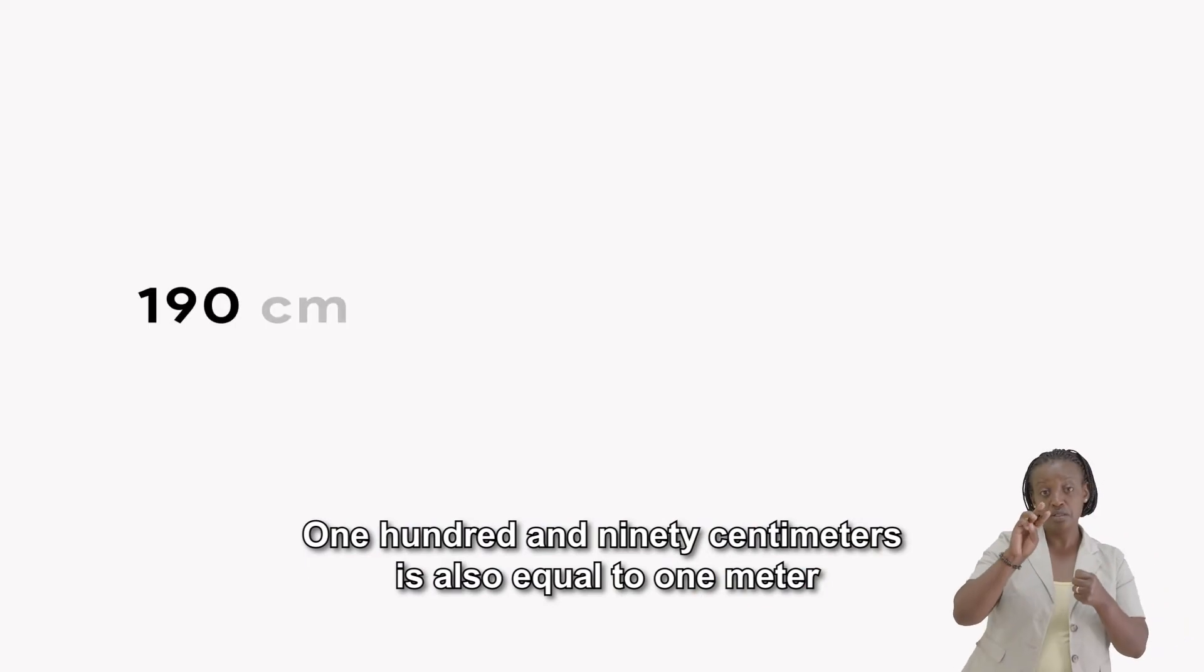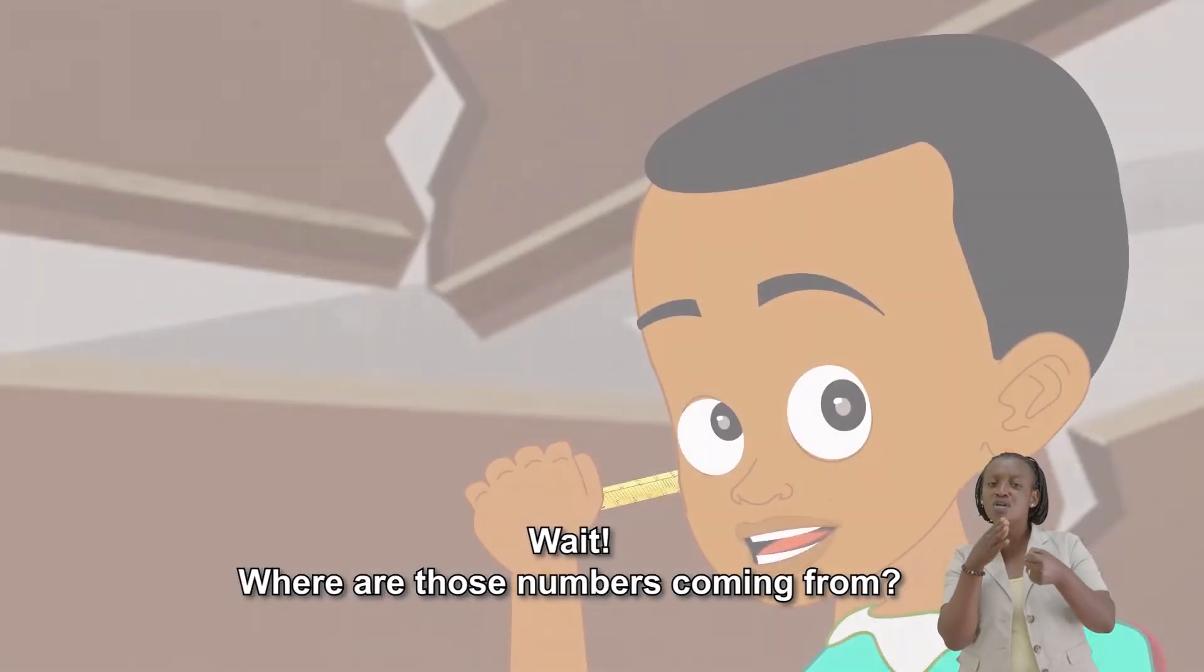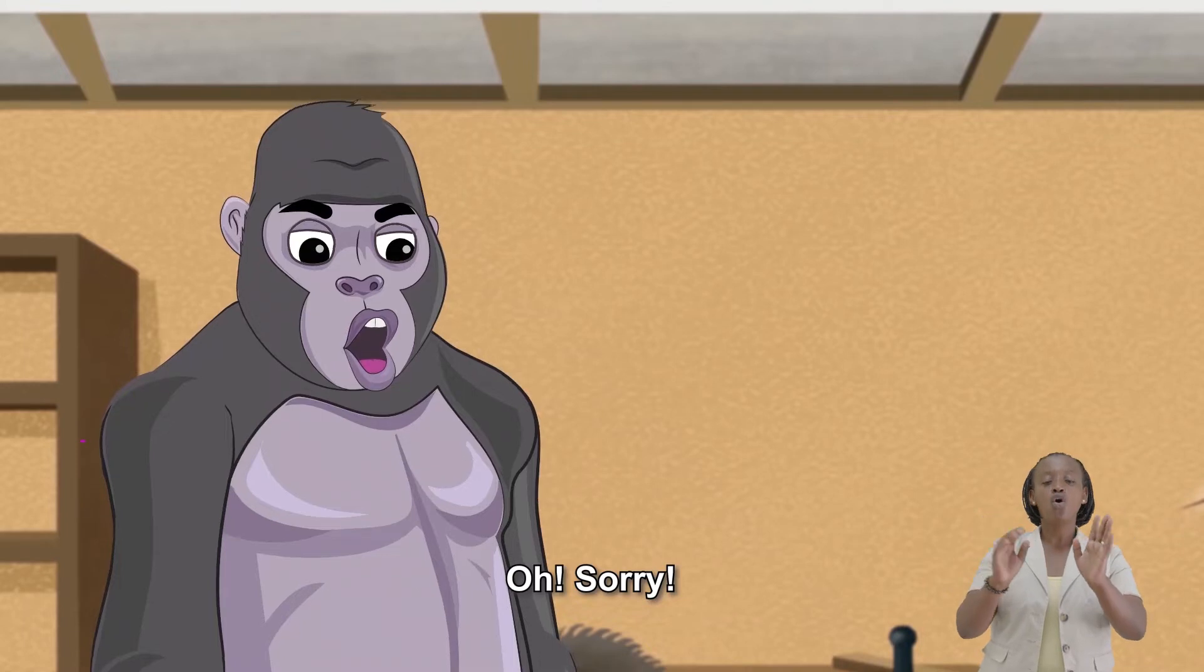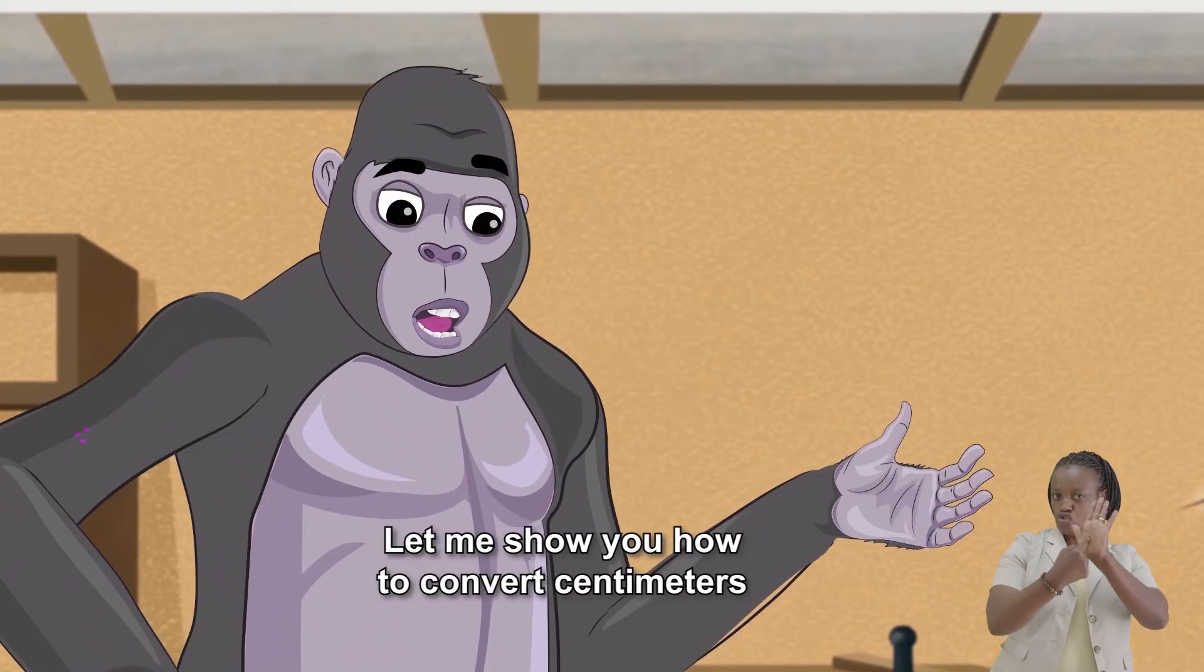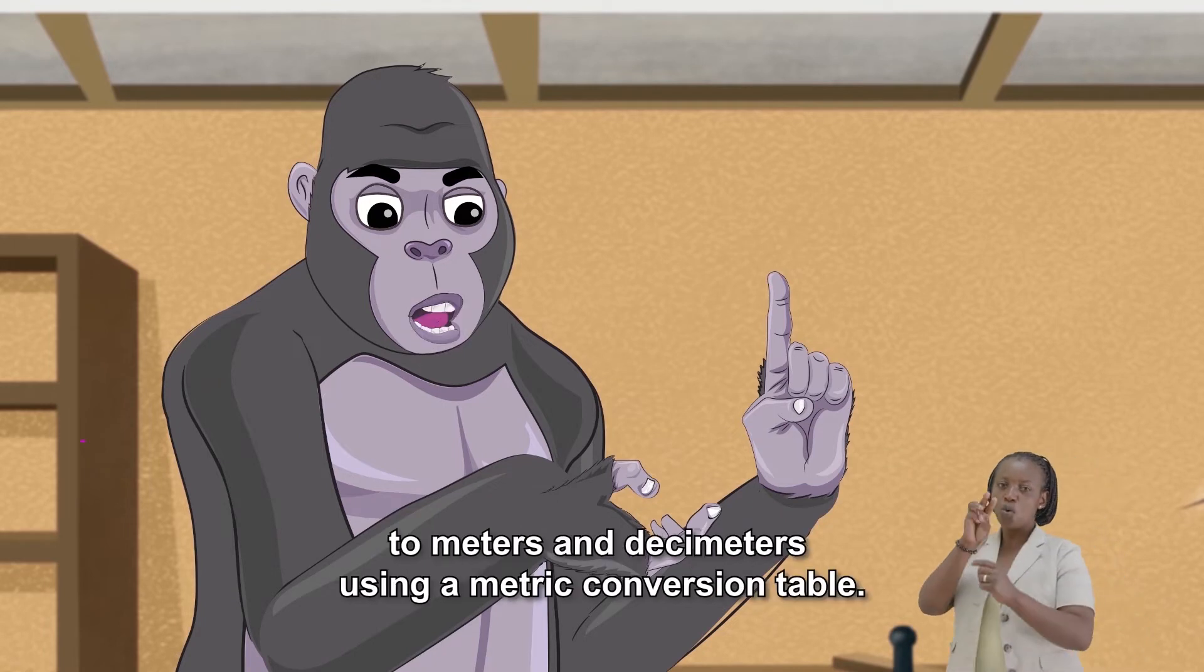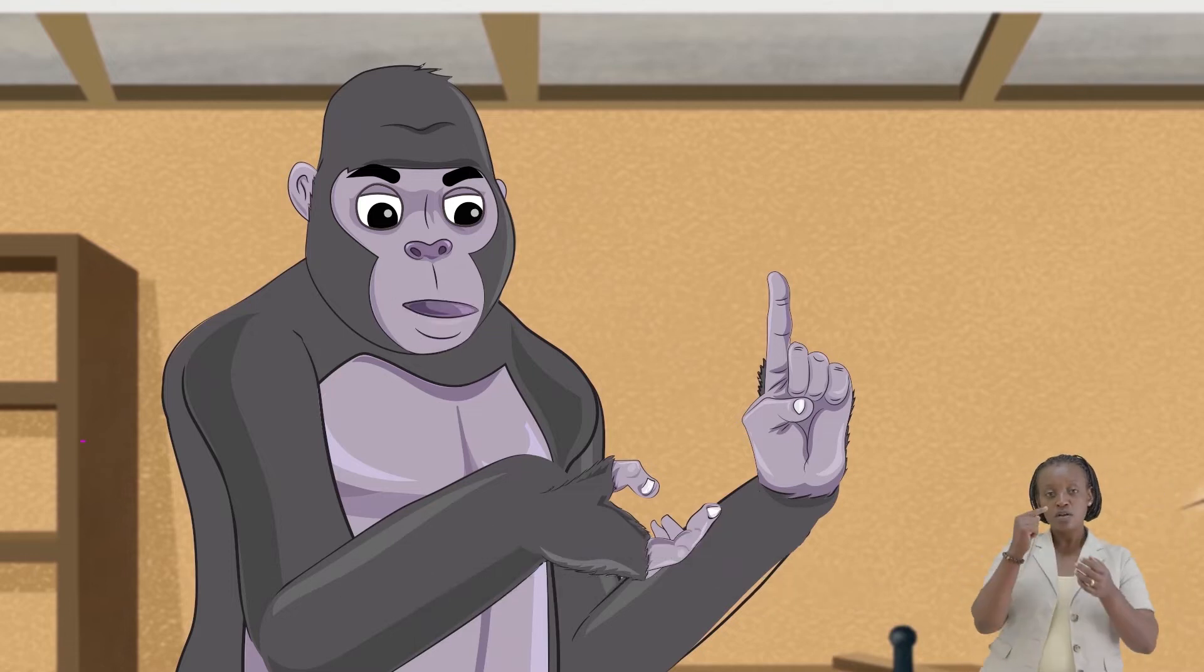190 centimeters is also 1 meter and 90 centimeters. And in decimeters, it is 19. Wait, where are those numbers coming from? Oh, sorry. Let me show you how to convert centimeters to meters and decimeters using a metric conversion table.